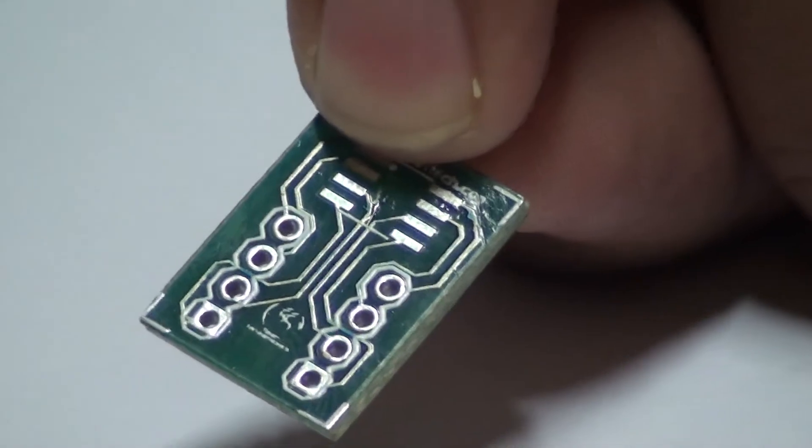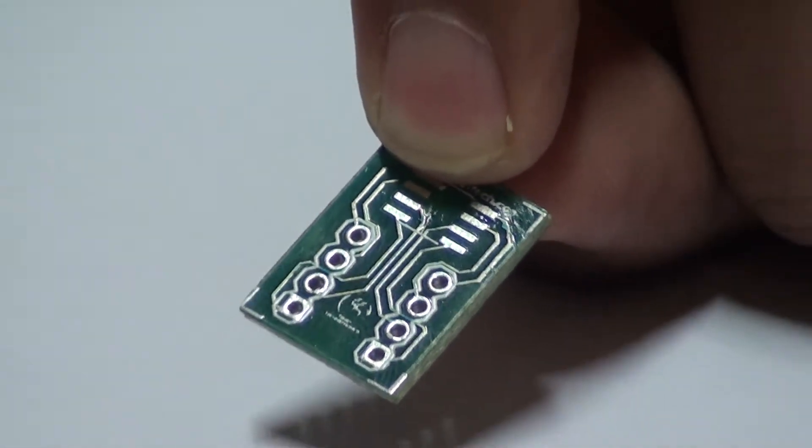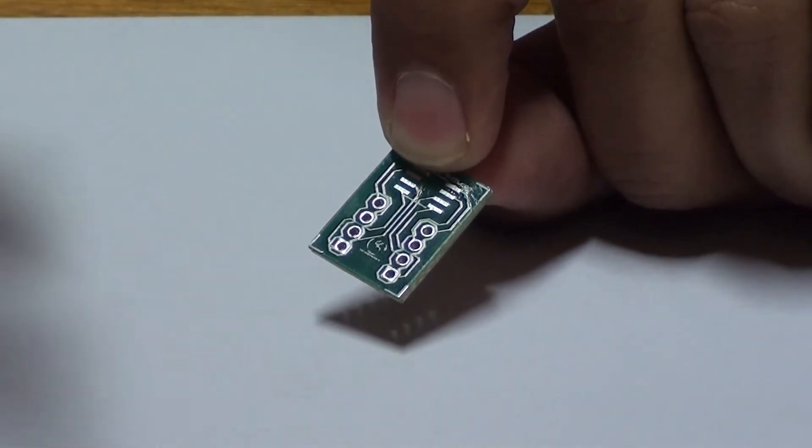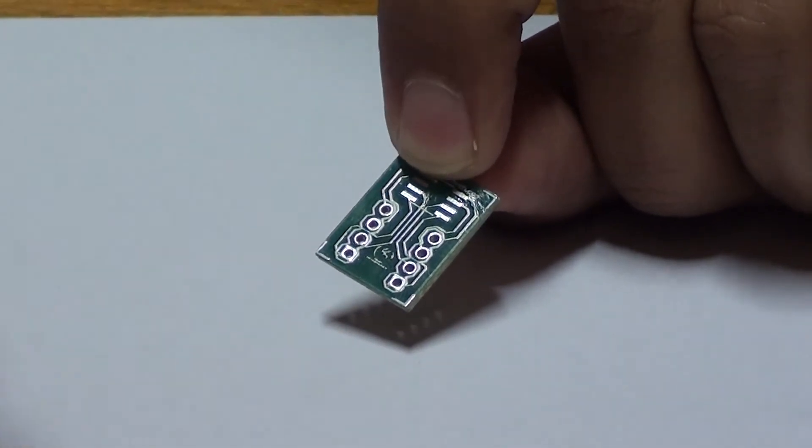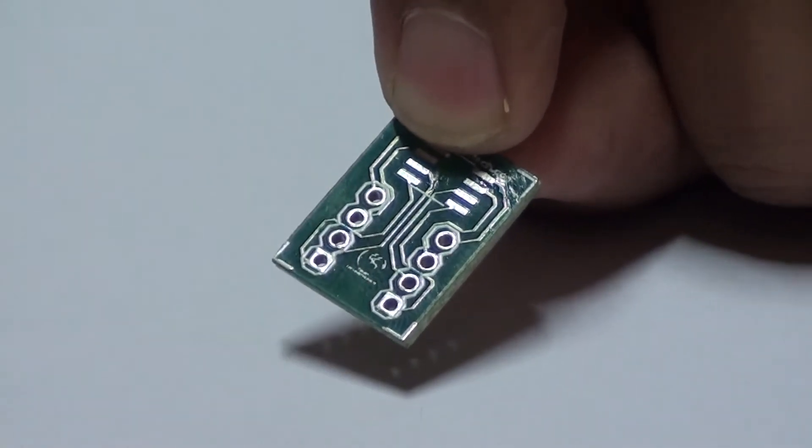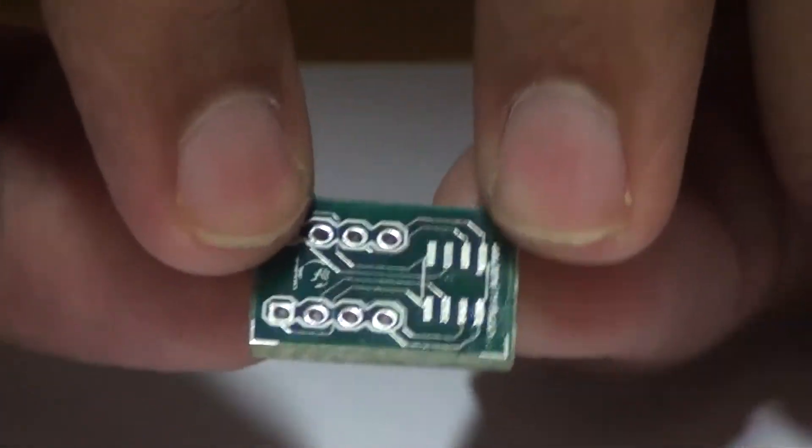These breakout boards ease the use of SOIC pins and can be used for components like LM386, 555 Timer, LM358, and many other 8 pin ICs. As you can see, this is a blank breakout board.